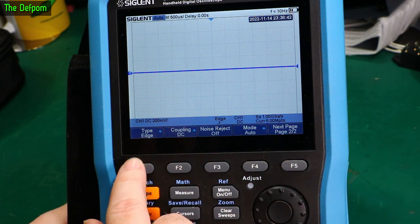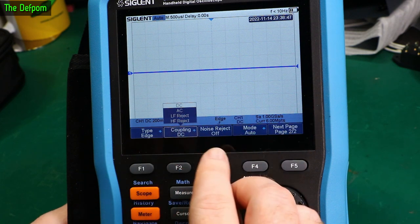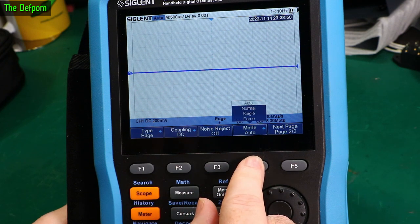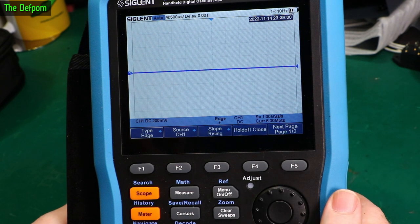Coupling. DC, AC. Low frequency, high frequency rejection. As always. Noise rejection. And auto, normal, single, or false. That's that menu. And of course you've got cursors.